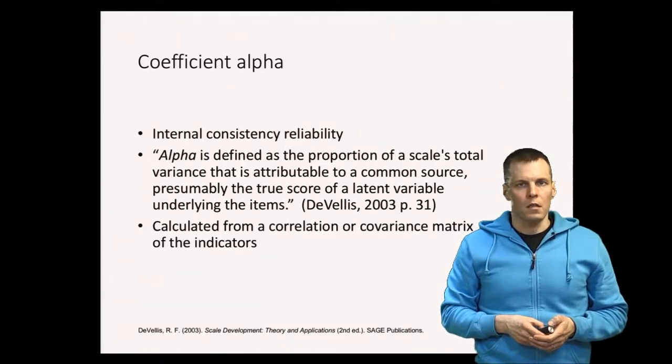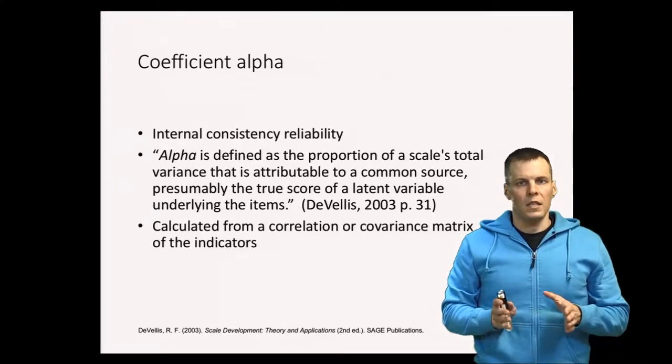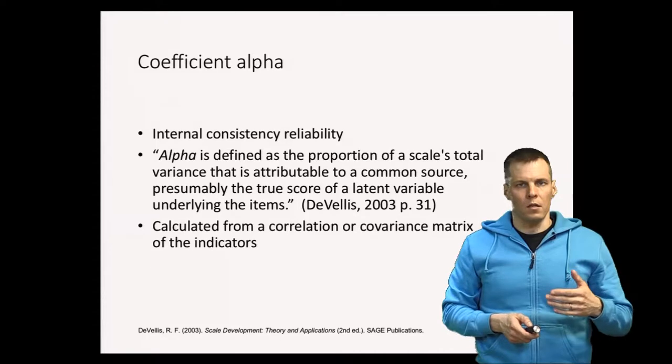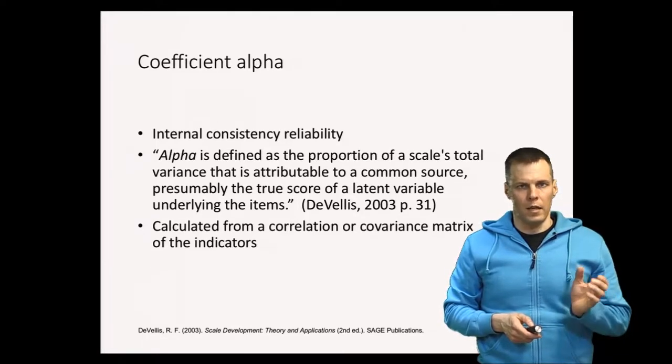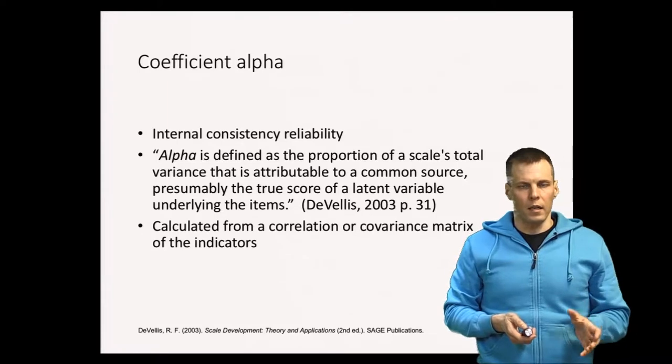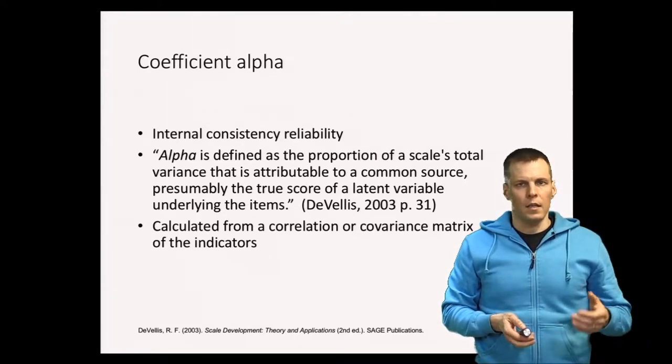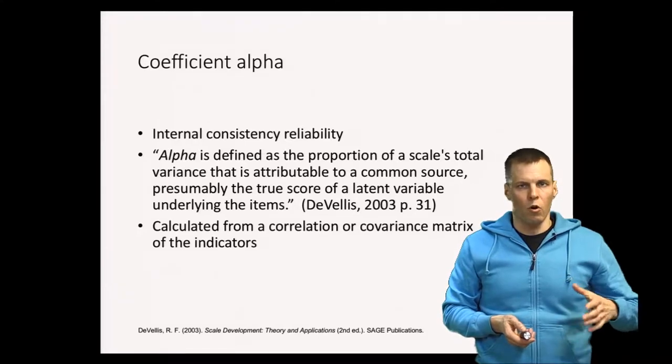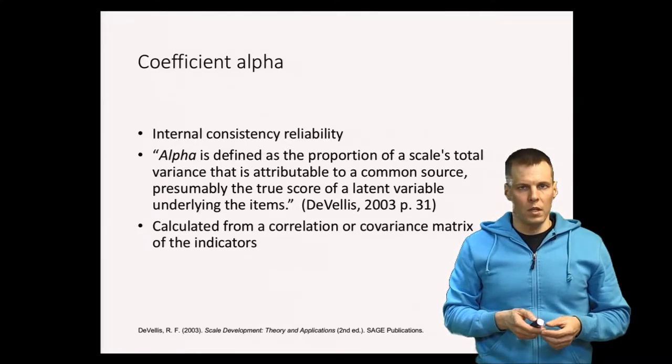Coefficient alpha is sometimes referred to as internal consistency reliability. What that means is it's calculated based on how consistent the indicators are internally, basically how highly the indicators are correlated. This index is calculated from the correlation matrix of the indicators or covariance matrix depending on which equation you apply.